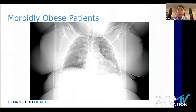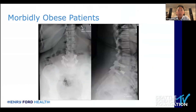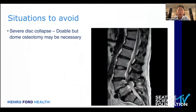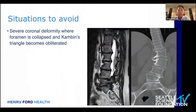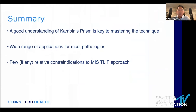Situations best avoided: morbidly obese patients — I practice in Michigan so someone with a BMI over 50 shows up, and while it's doable, any approach will be difficult so I stick with my default to get the case done. Severe disc collapse is doable but may require osteotomy and is more appropriate for experienced MIS TLIF surgeons; this particular patient had unfavorable psoas anatomy so I was forced to do an MIS TLIF with a dome osteotomy through a tube — definitely a more advanced technique. Finally, severe coronal deformity where Kambin's triangle is essentially obliterated and the exiting nerve root is draped over the disc — that's not a case for TLIF.